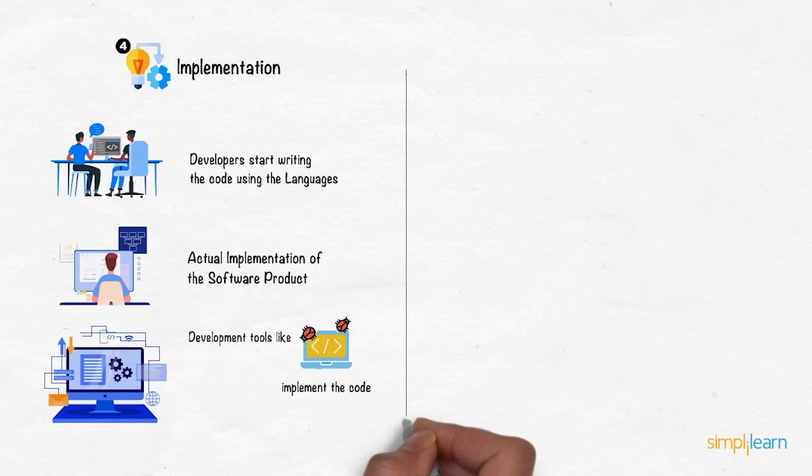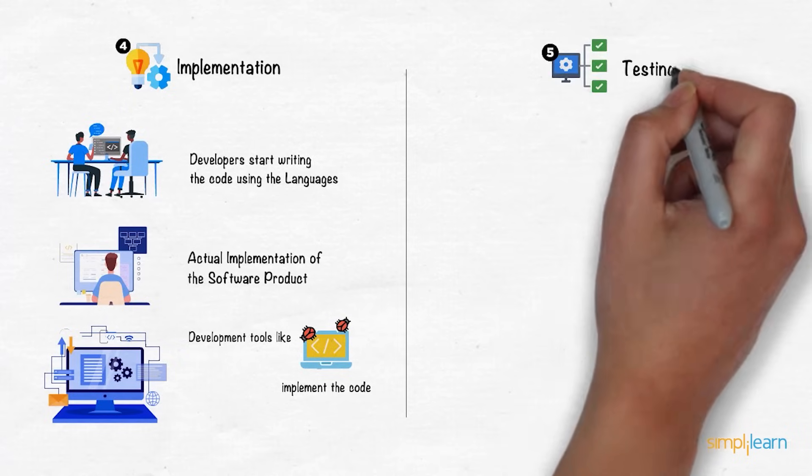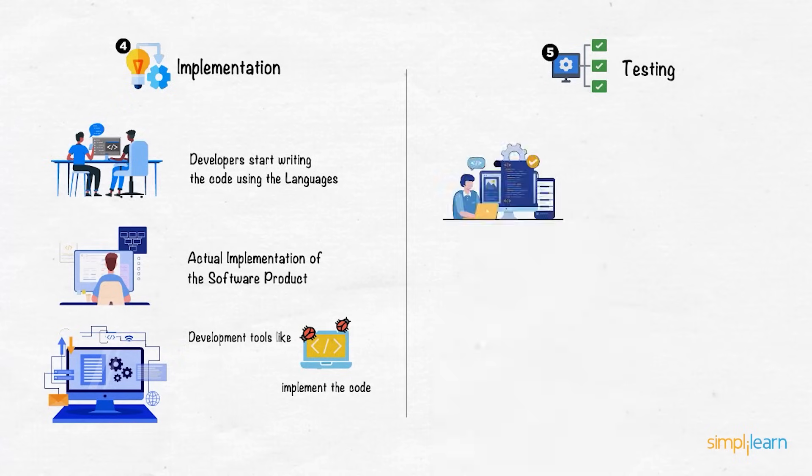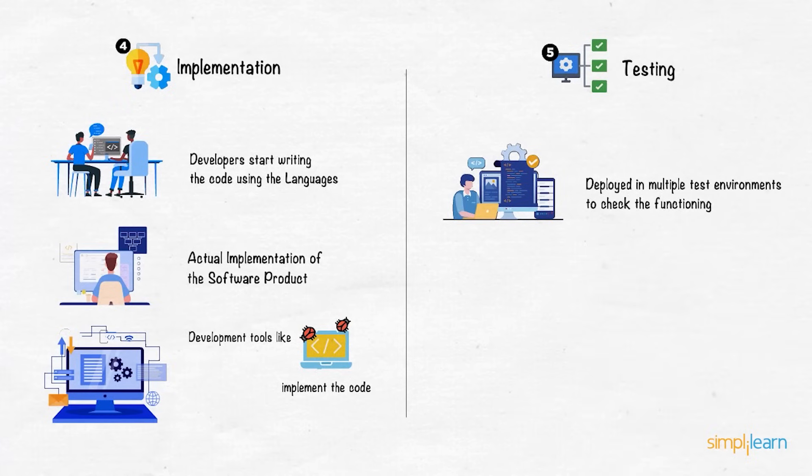The next phase of production is the fifth stage of software development, the testing phase. The developed software is now deployed in multiple test environments to check the functioning of all the attributes in the software architecture.